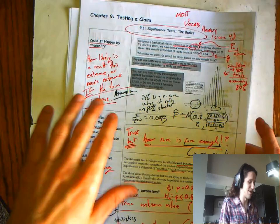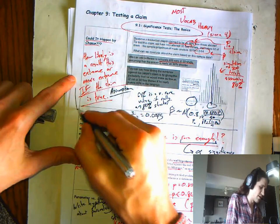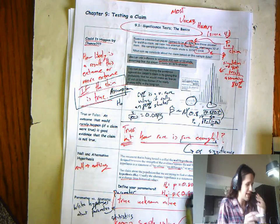We talked about significance tests, talked about the assumption. This is the big question. How likely is a result this extreme or more extreme if the claim is true? We're going to always be assuming that the null hypothesis is true.